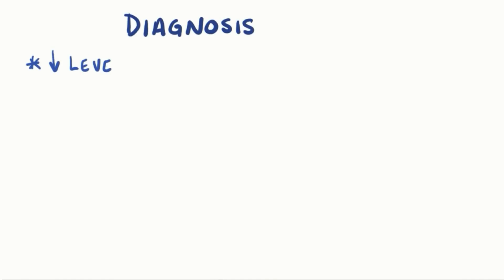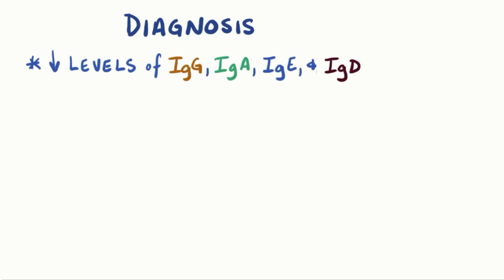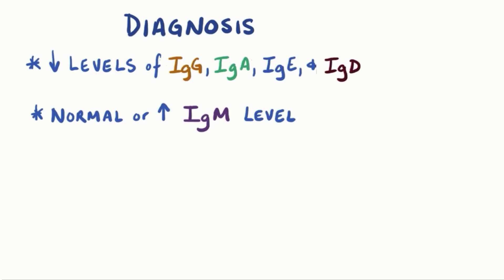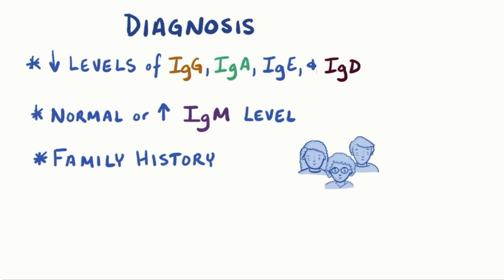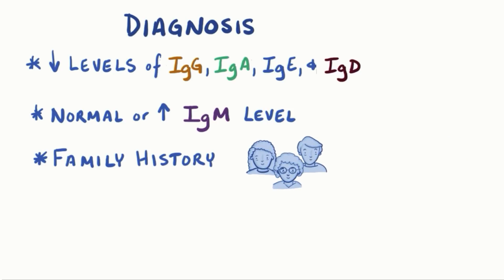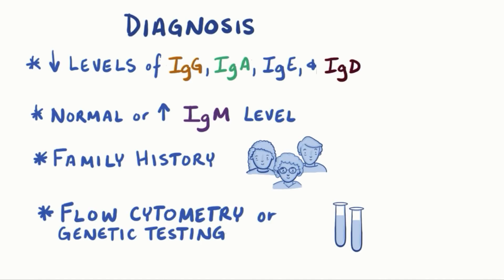The symptoms of hyper-IgM are related to the chronic infections a person develops, and the diagnosis is based on finding low levels of IgG, IgA, IgE, and IgD antibodies with a normal or elevated IgM level. Usually there's a family history of the disease, and in the majority of cases flow cytometry or genetic testing can confirm that there's a mutated CD40 ligand.